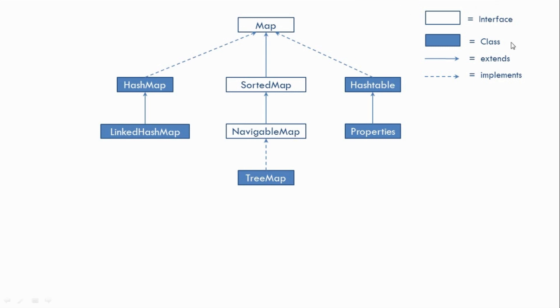Now let's look at the hierarchy of the Map interface. Again, we have the same notation — some classes and some interfaces. You can note down this diagram or take a snapshot for future reference. Now let's look at some of the characteristics of our three main interfaces: List, Set, and Map.